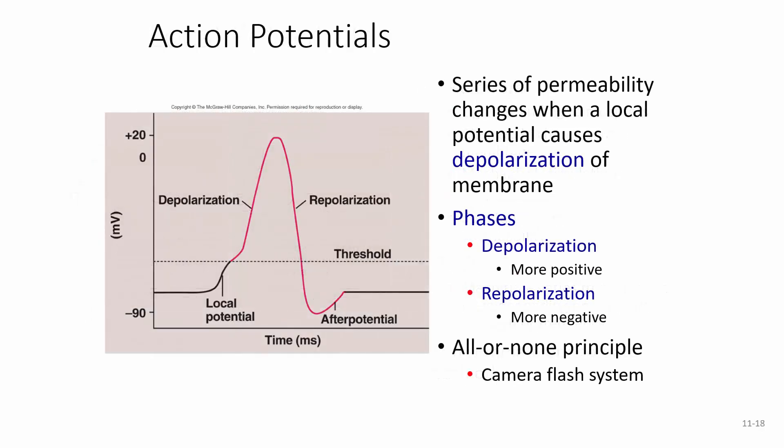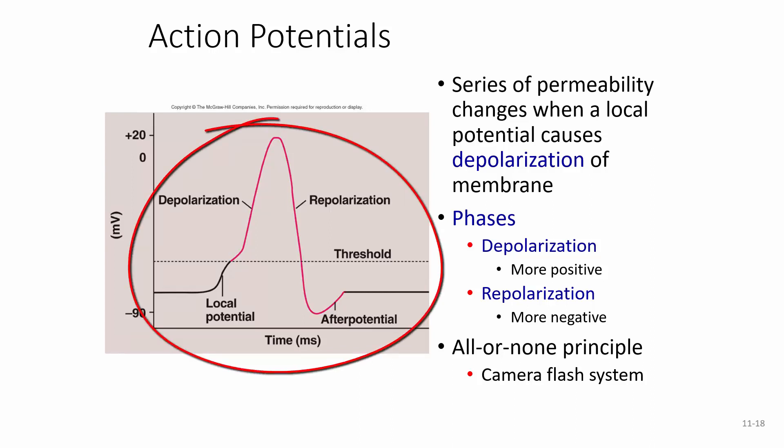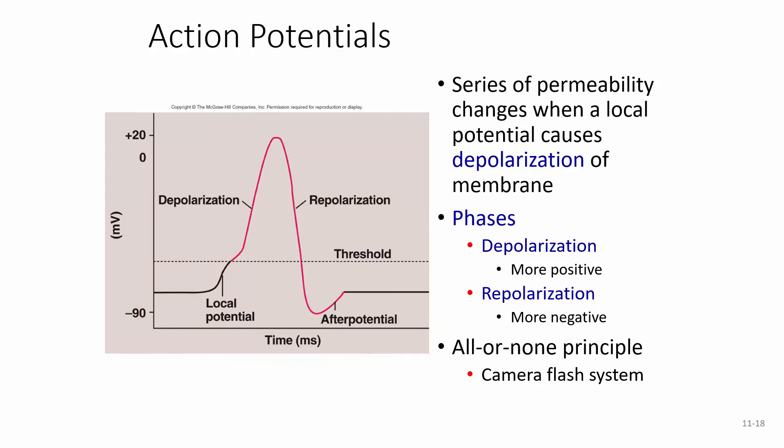Action potentials are a series of permeability changes. When a local potential causes depolarization of the membrane, the phases are: depolarization — more positively charged — and repolarization — more negatively charged. If we look at this graph, it almost looks like an EKG — and that's exactly what we're looking at: the electrical potential of the heart as it depolarizes and repolarizes.